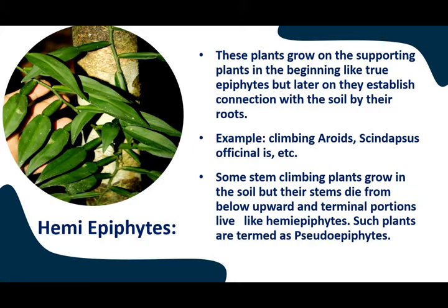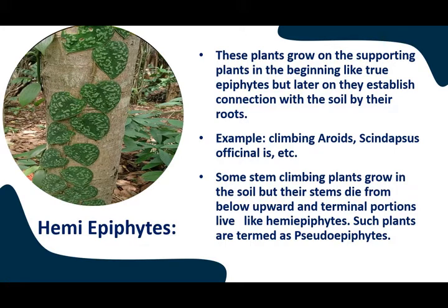The second type is hemi-epiphytes. These plants grow on supporting plants in the beginning like true epiphytes, but later on they establish connection with the soil by their roots. Examples are climbing aroids and Syngonium officinale. Some stem-climbing plants grow in the soil but their stem dies from below upward, and the terminal portion lives like hemi-epiphytes. Such plants are termed as pseudo-epiphytes.